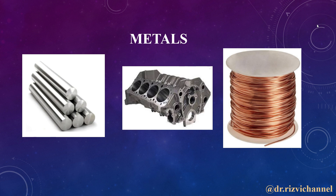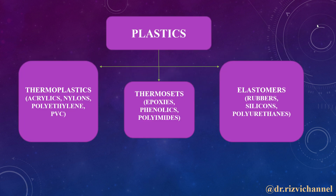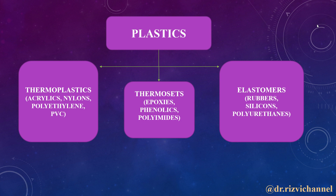Moving on to the next classification — plastics. Plastics are basically classified into 3 types: thermoplastics, thermosets, and elastomers. Thermoplastics comprise acrylics, nylons, polyethylenes, and PVCs. Thermosets basically comprise epoxies and phenolics. Elastomers comprise rubbers and silicones.